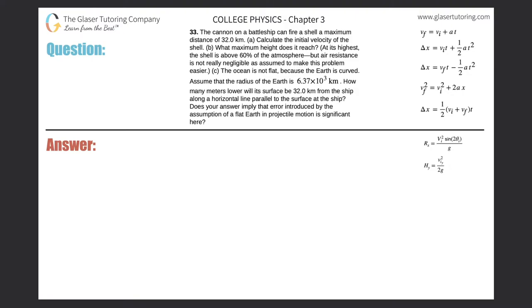Number 33. The cannon on a battleship can fire a shell a maximum distance of 32 kilometers. Part A: calculate the initial velocity of the shell.